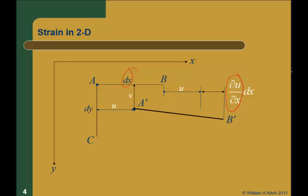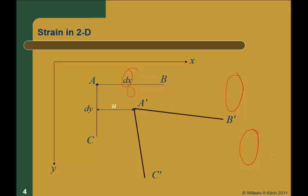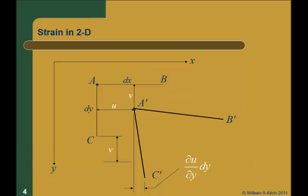In the y direction, B is going to move V plus a little more — specifically dV/dx times dx, the partial of the V displacement in the x direction times dx. And we can do the same thing in the other direction. Point C has to move U in the x direction plus the partial of U with respect to y times dy. And in the y direction, C is going to displace V plus the partial of V with respect to y times dy.